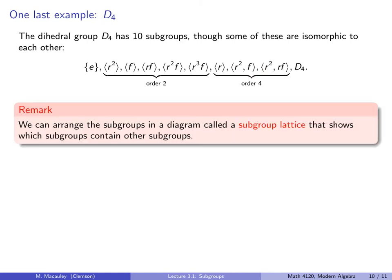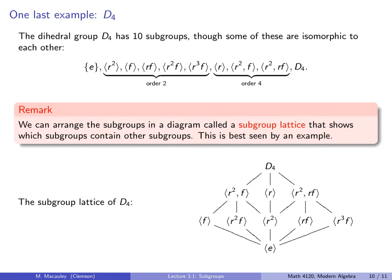So a quick remark. We can arrange the subgroups of any group in a diagram called a subgroup lattice that shows which group contains other subgroups. So here's the subgroup lattice of D4, all ten of the subgroups. And these are ordered vertically by subset inclusion. This subgroup generated by R3F is also a subgroup of this subgroup. This is contained in this because this lies above it, but this is not contained in this subgroup because there's no path going from here up to there.